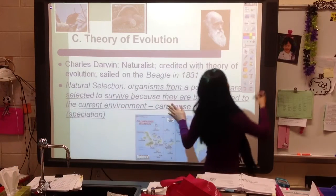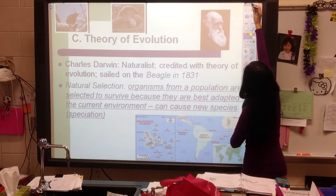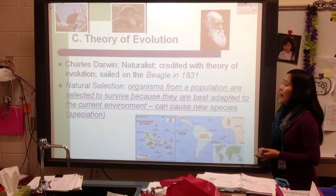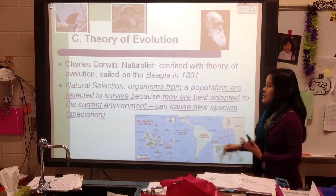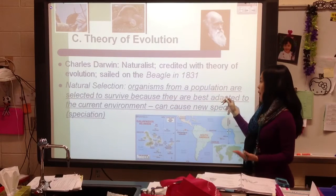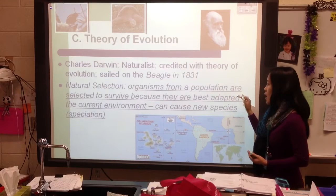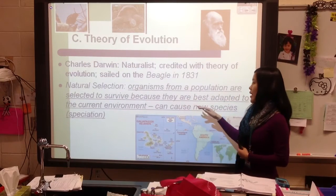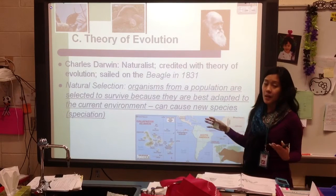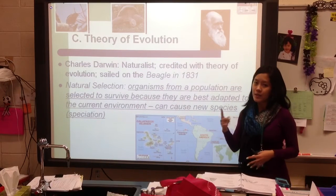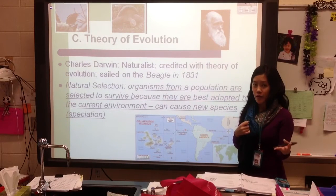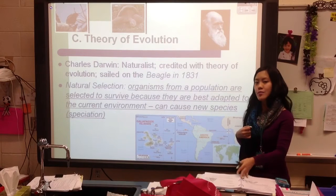The main concept we need to understand in this section is natural selection. Natural selection is the idea that an organism from a population can be selected to survive because it is best adapted to the current environment. That means one living thing can have a specific trait that allows it to survive better at a particular time.